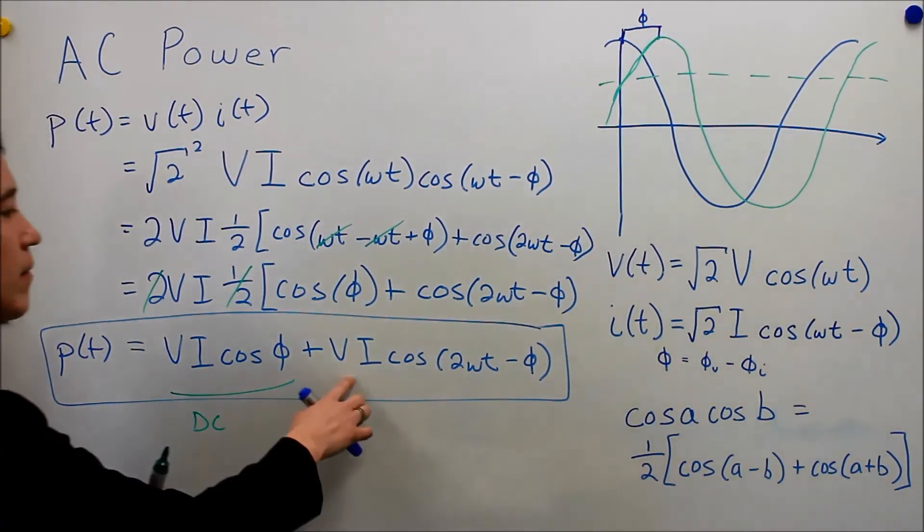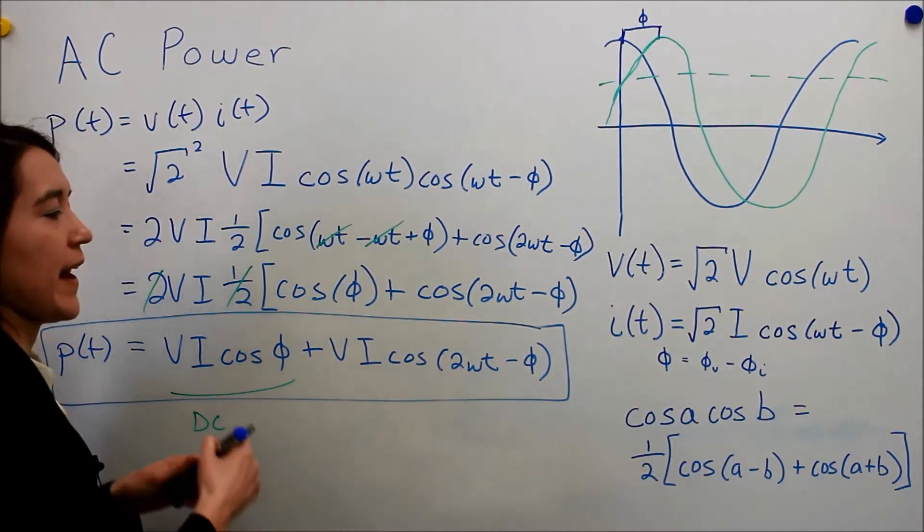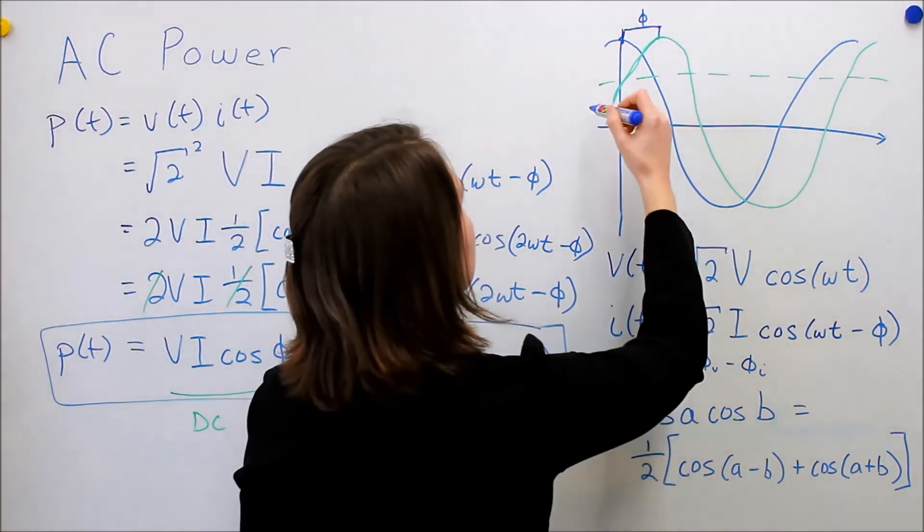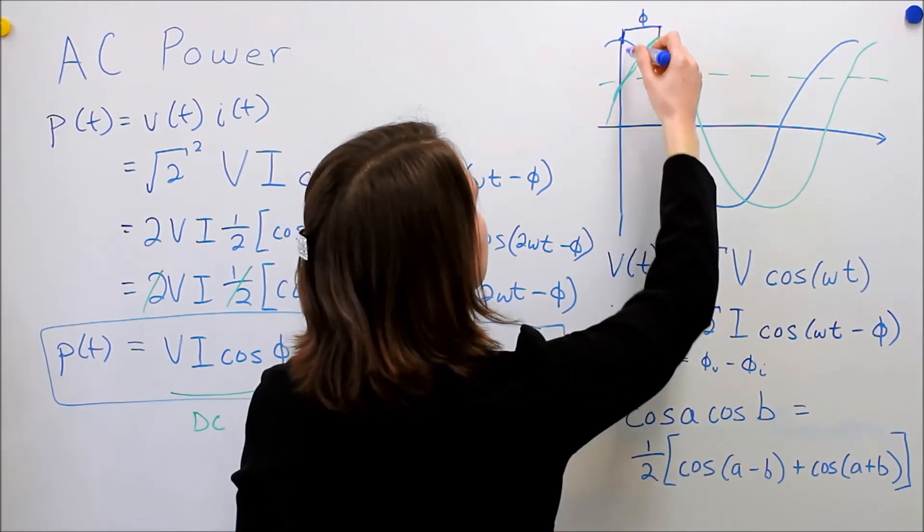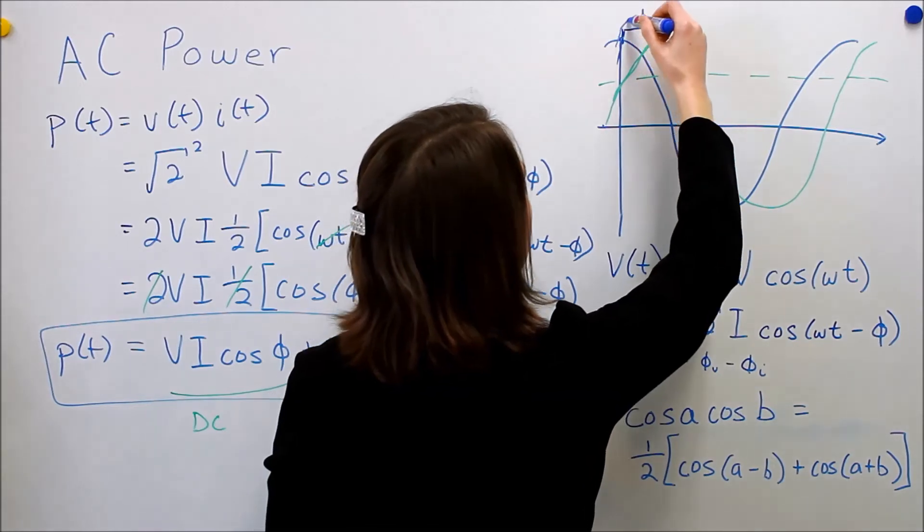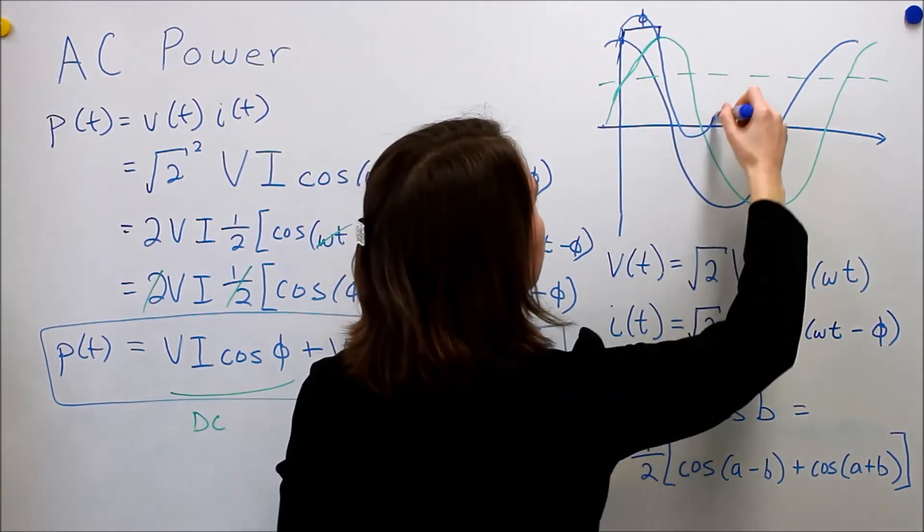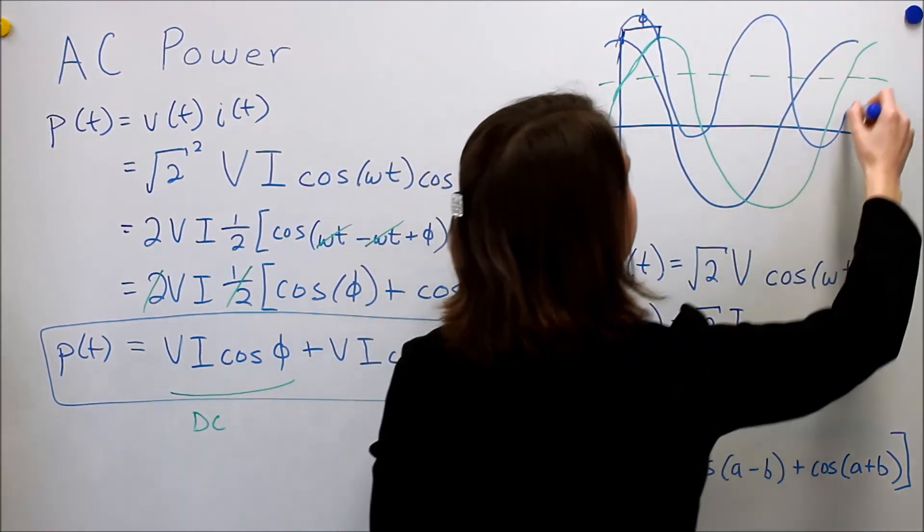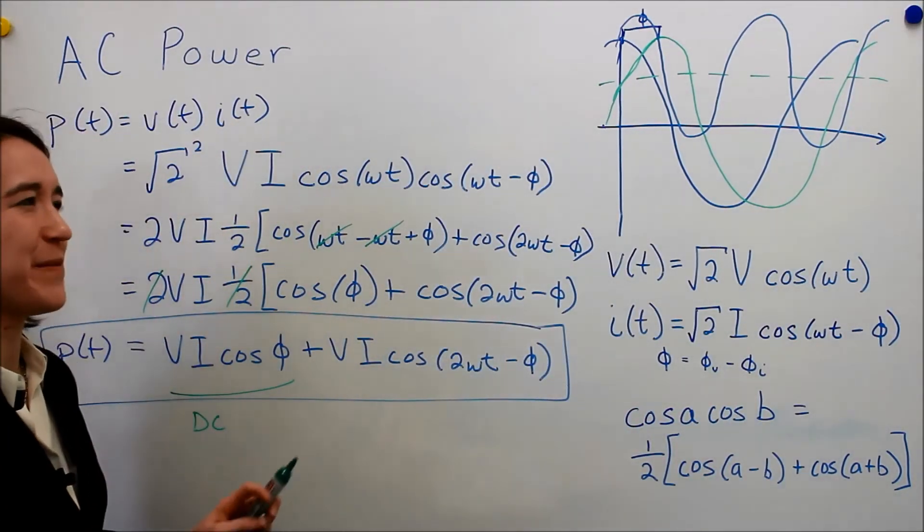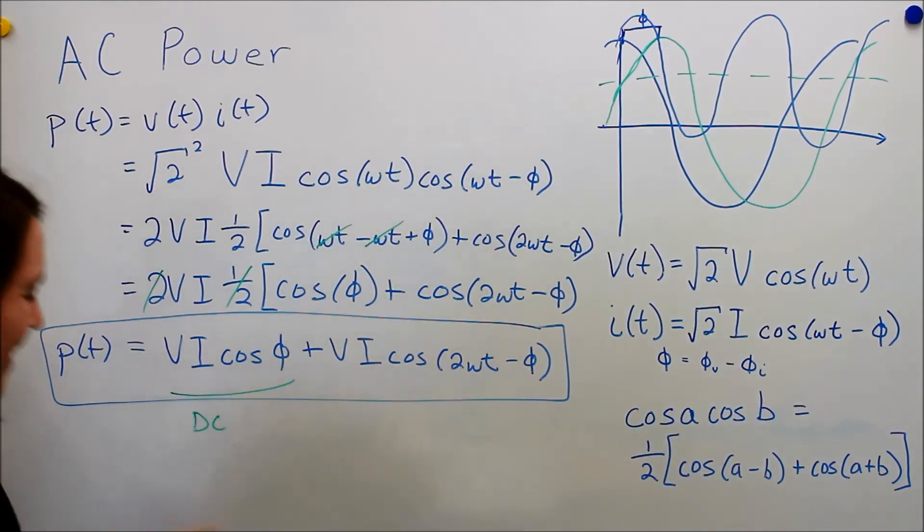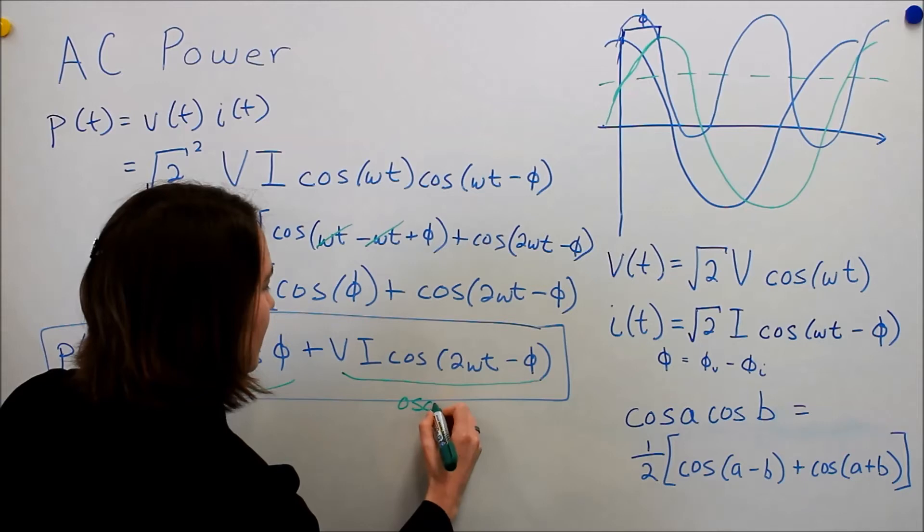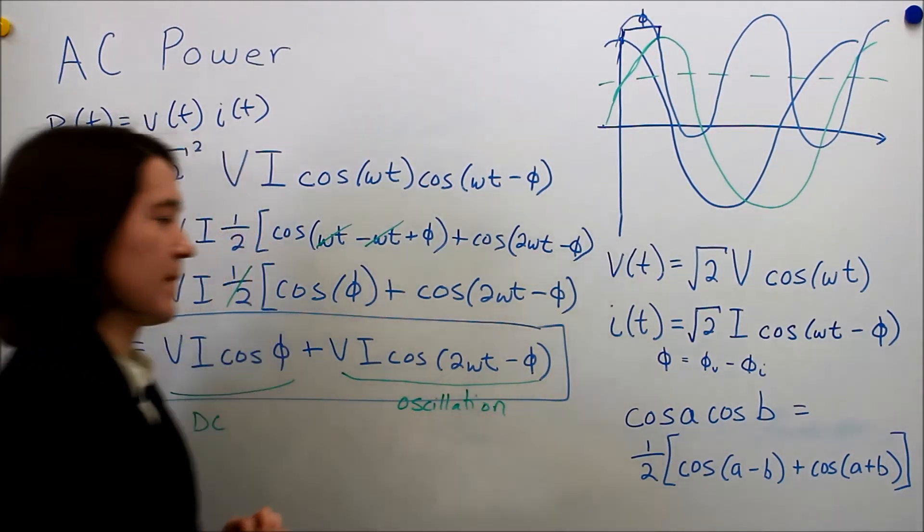And then we have some oscillating waveform that is 2 times the frequency here. So we would get some sort of waveform here. You should actually look at a book to get the right waveform. I'm really bad at drawing these. So this is the oscillatory component. So we have some sort of oscillation.